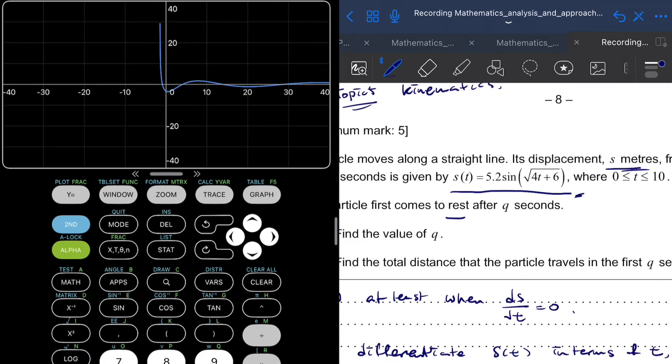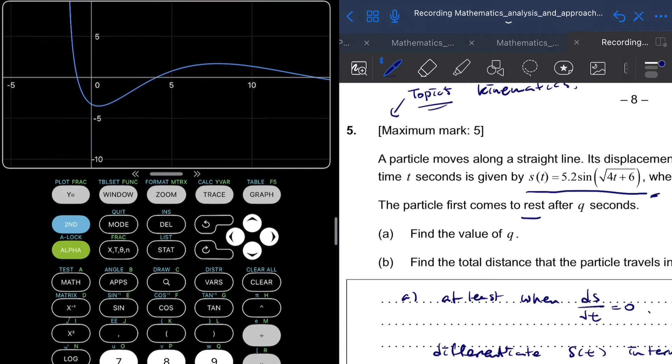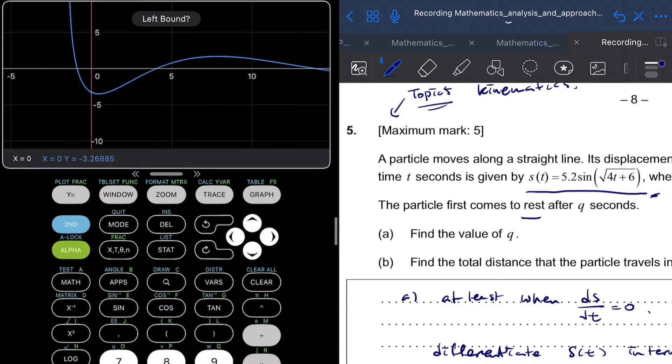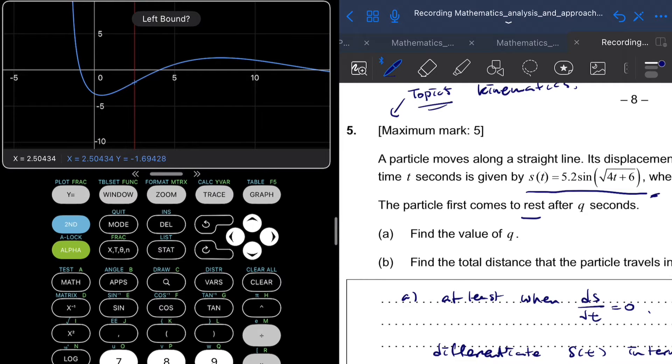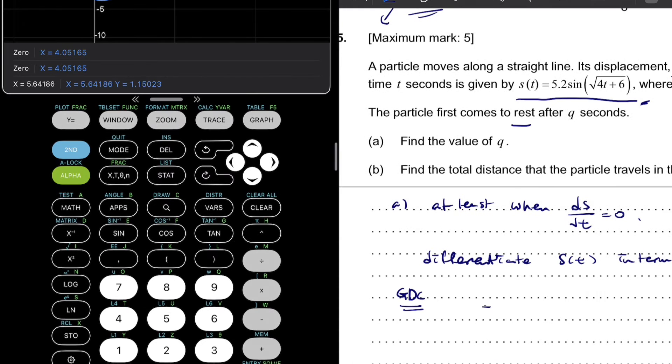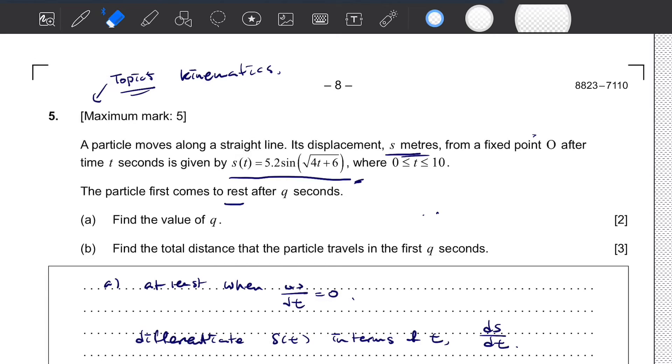Since the t value has to be between 0 and 10, we're going to zoom into our graph and find the roots. We go to second calc, find the zero, choose the left bound, identify our right bound, hit enter, and find the zero. Here we've found the zero value or the root: t equals 4.05165. So we can say that q value is approximately 4.05.